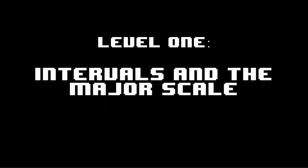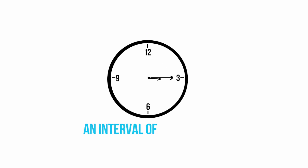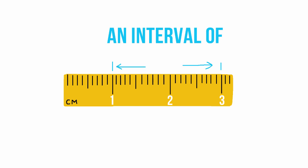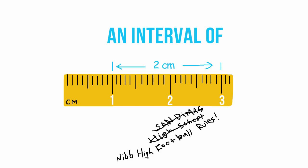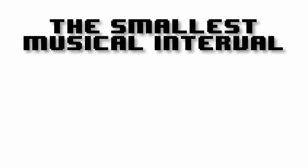Intervals are the building blocks of melody and harmony in music. An interval is a measure of the distance or space between two points. Picture a clock — the distance between three o'clock and 3:15 is an interval of 15 minutes. Likewise, if you look at a ruler, the distance between one centimeter and three centimeters is an interval of two centimeters. In music, we use intervals to describe the distance between two notes.